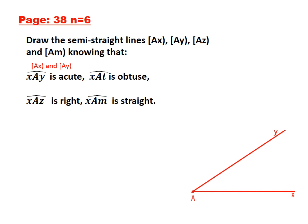Let's move to the second angle, we have XAT. The first semi-line is AX and the second semi-line is AT. We have drawn AY; now the second semi-line is AT. It must be more than 90 degrees because XAT is an obtuse angle.